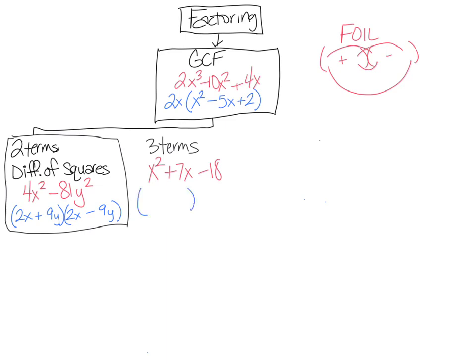Here's the example: x squared plus 7x minus 18. I set up two binomials. The first will be x times x. For the last, I need something that multiplies to get negative 18 — maybe negative 6 times positive 3. But when you do outer and inner, they combine to negative 3x when added together, and I want positive 7x. So I picked the wrong ones. I need factors that multiply to negative 18 but also add up to positive 7.